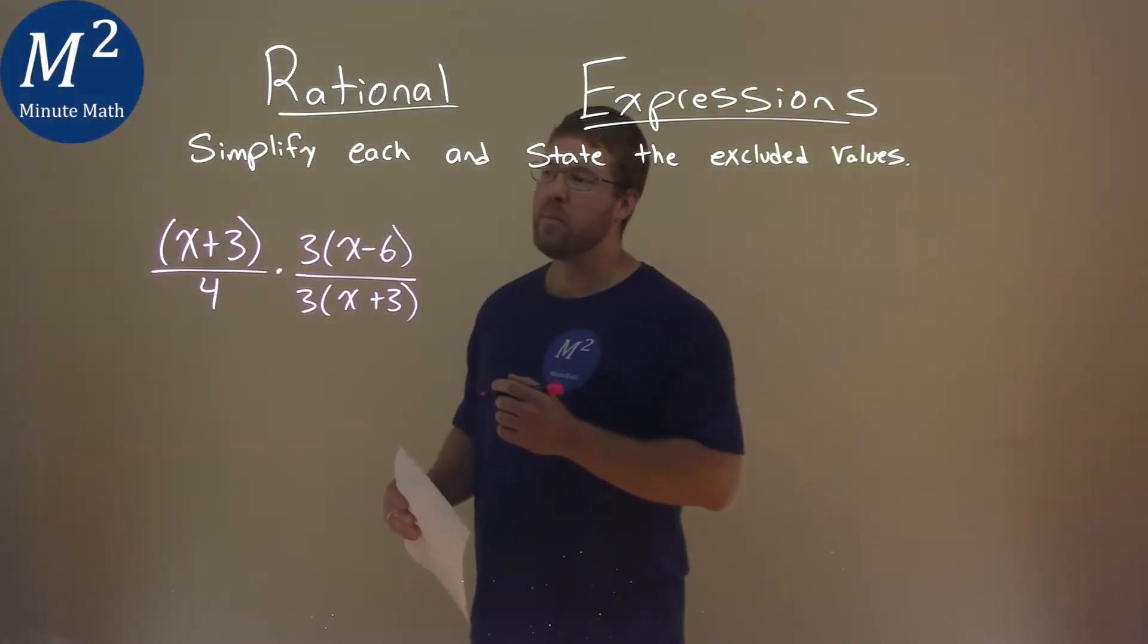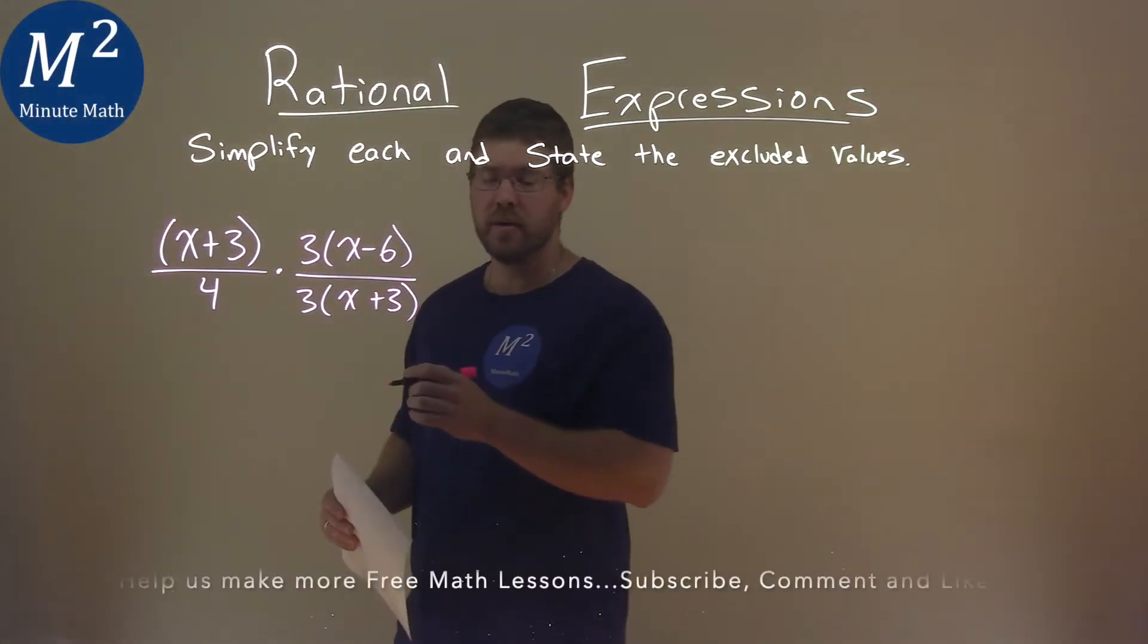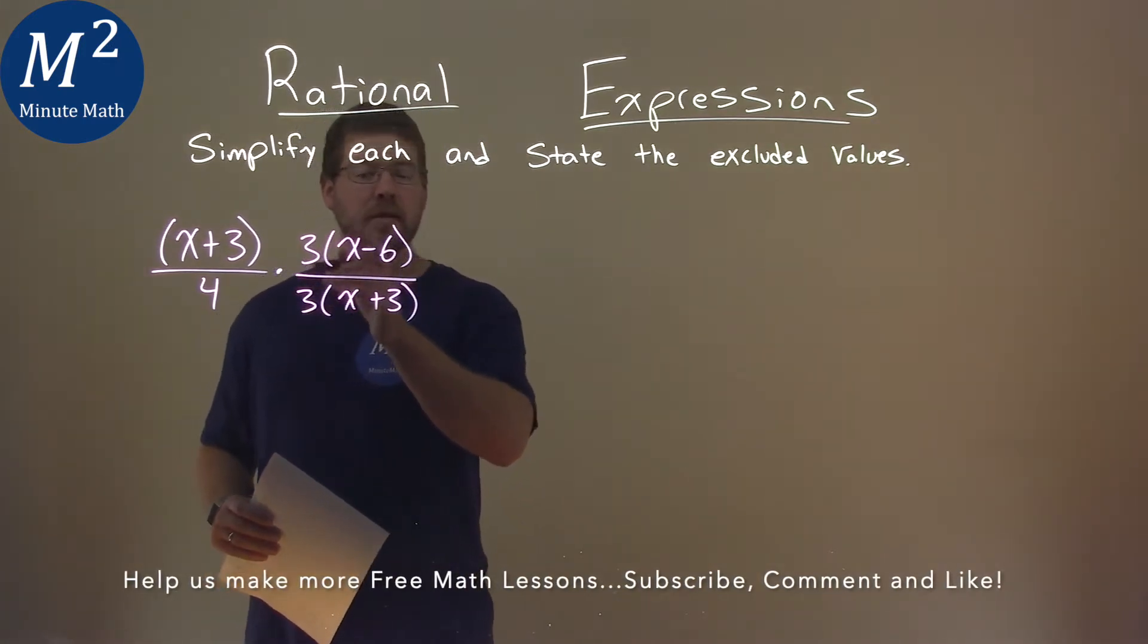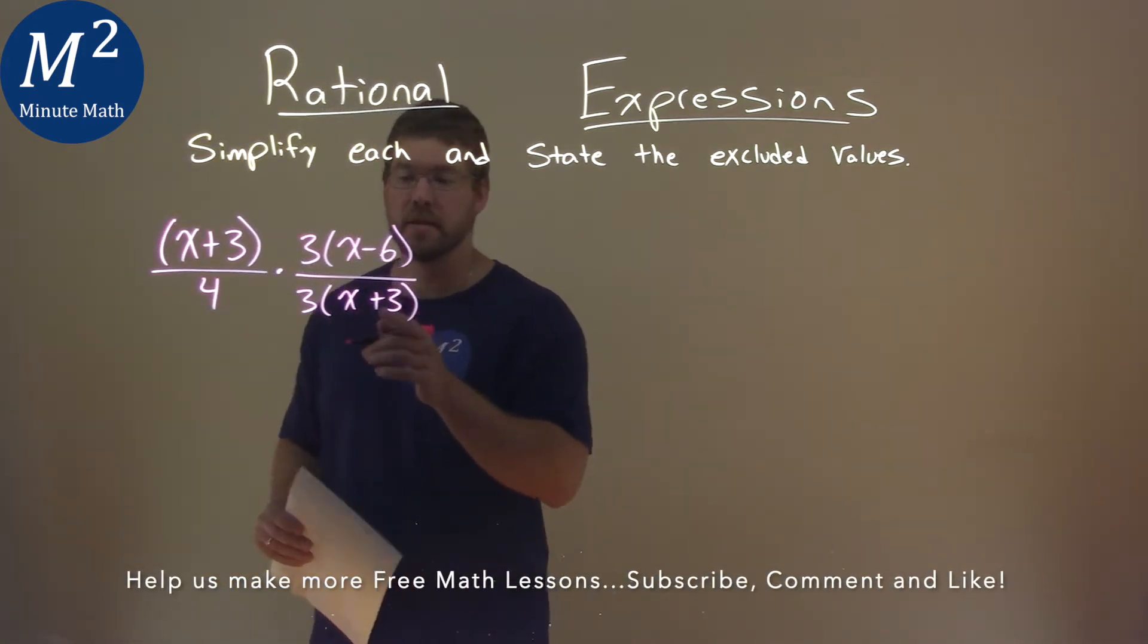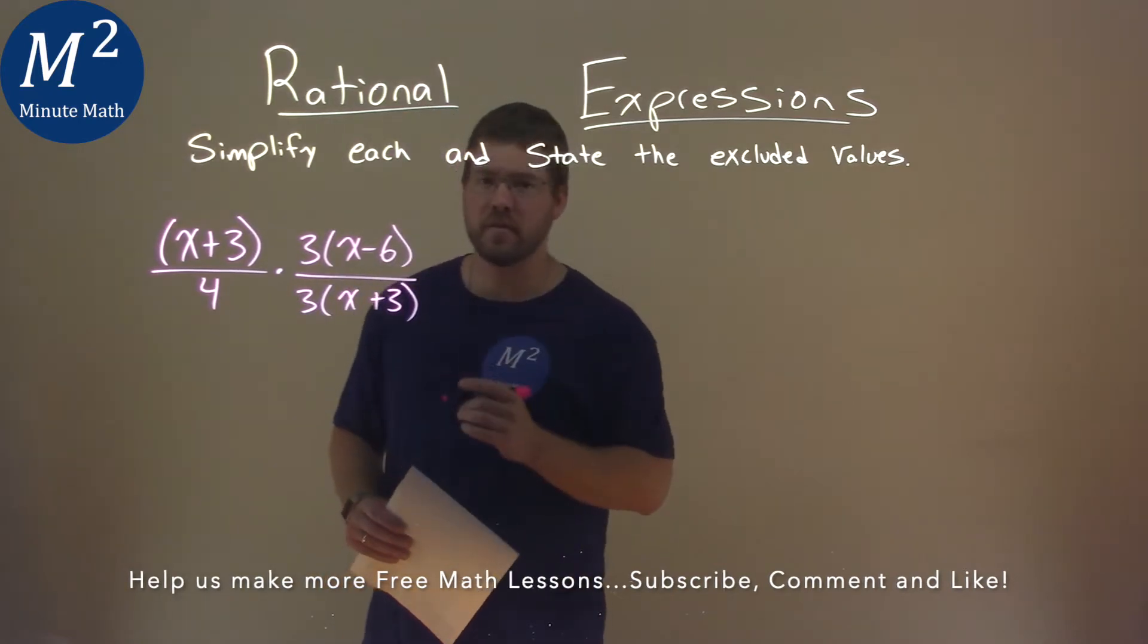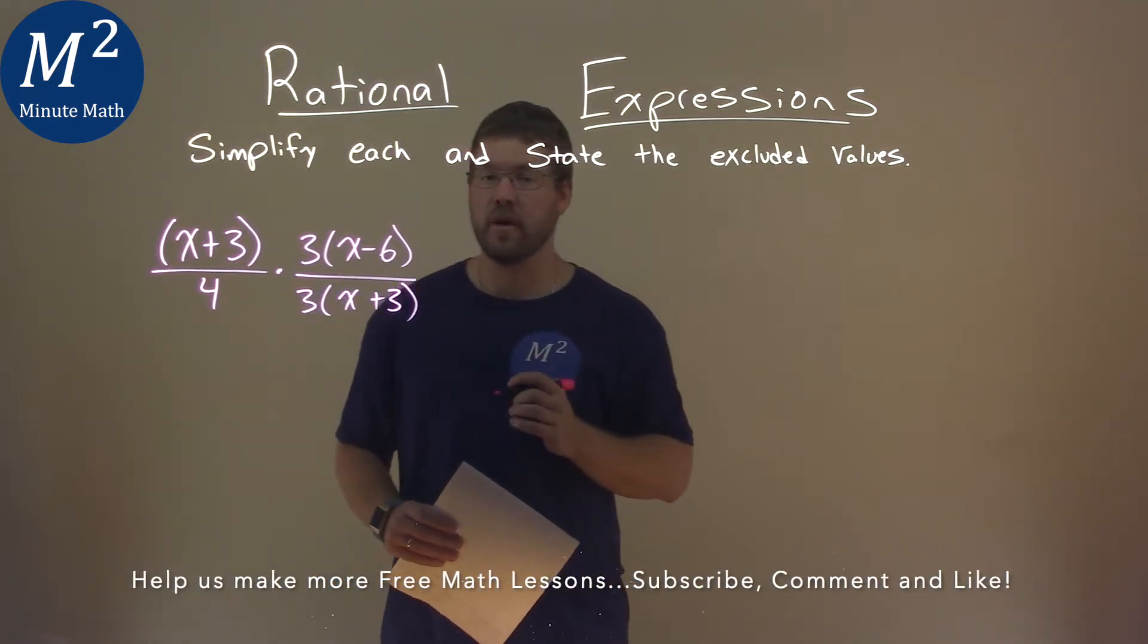We're given this problem right here: x plus 3 over 4, times 3 times x minus 6 over 3 times x plus 3. We have to simplify this and state the excluded values.